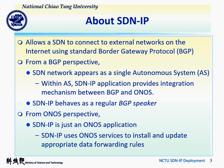First, we introduce some main concepts of SDNIP. SDNIP is a project to allow SDN to connect to the external network regardless of whether it is an SDN network or traditional network. From a BGP perspective, we can view SDN as an AS. Within the AS, the SDNIP application provides an integration mechanism between BGP and ONOS. Overall, SDNIP can be seen as a BGP speaker. From the ONOS perspective, SDNIP is only an application on top of ONOS. SDNIP will install or update flow entries on OpenFlow switches according to the result of BGP exchange.